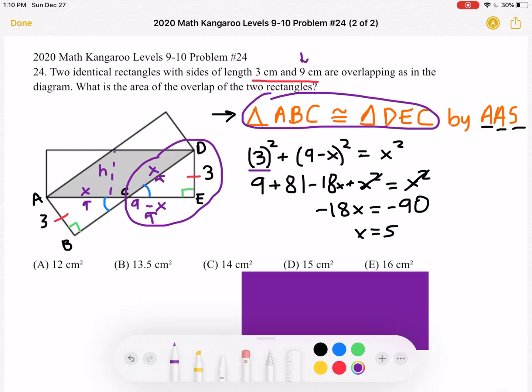So 3 squared plus the other leg squared, which is 9 minus X, (9 minus X) squared must be equal to the hypotenuse squared, which is X squared. When you FOIL this out, the X squareds will cancel on both sides, and you'll have negative 18X equals negative 90.